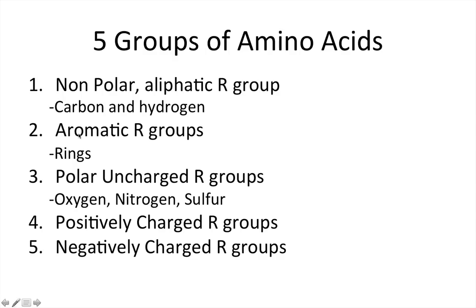The next group is aromatic R groups — those are R groups that have ring structures. The third group is polar uncharged R groups, meaning it has oxygen, nitrogen, or sulfur — basically something in addition to just carbon and hydrogen. And then there are the positively charged R groups and the negatively charged R groups.